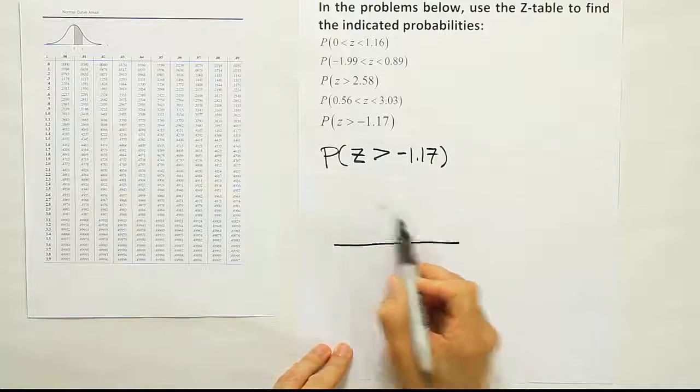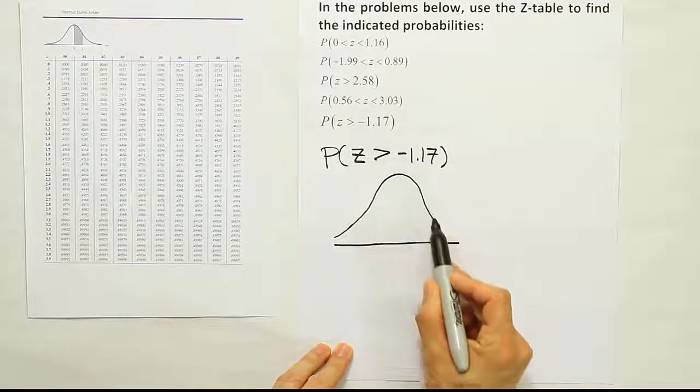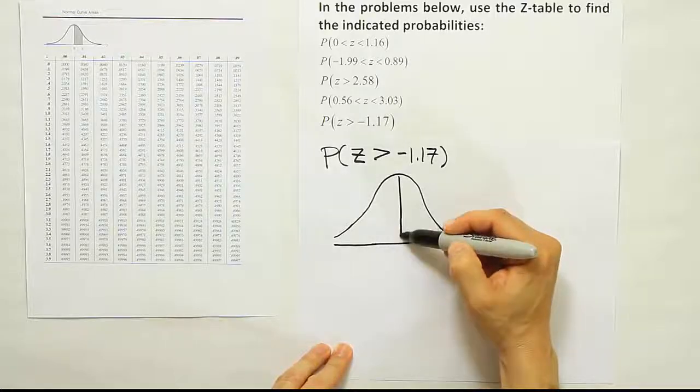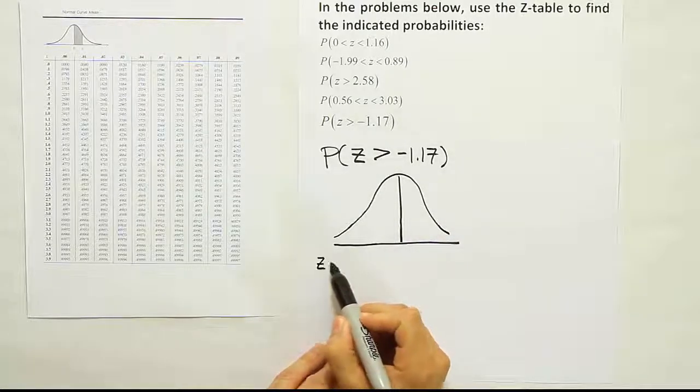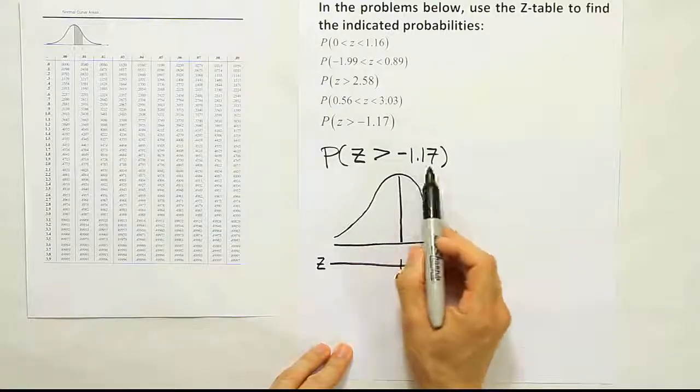Once again, I see that z indicating standard normal, so I'm going to draw a bell curve. Now, the z number line underneath is centered at zero, and we're going to try to locate this number on the number line.